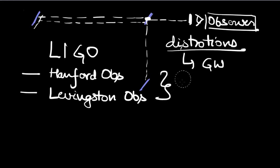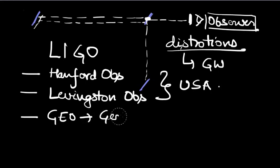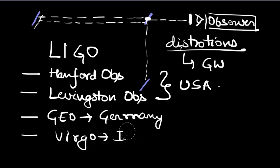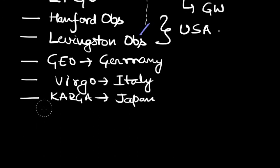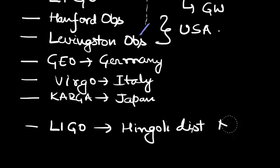Both of these observatories are in the U.S. Although there are few more observatories which are involved in this kind of work: GEO in Germany, Virgo in Italy, and KAGRA in Japan. One more thing important to know about LIGO is that a next LIGO is coming in India as well, and it will be coming in the Hingoli district of Maharashtra. So India will also be involved in this gravitational wave observation.